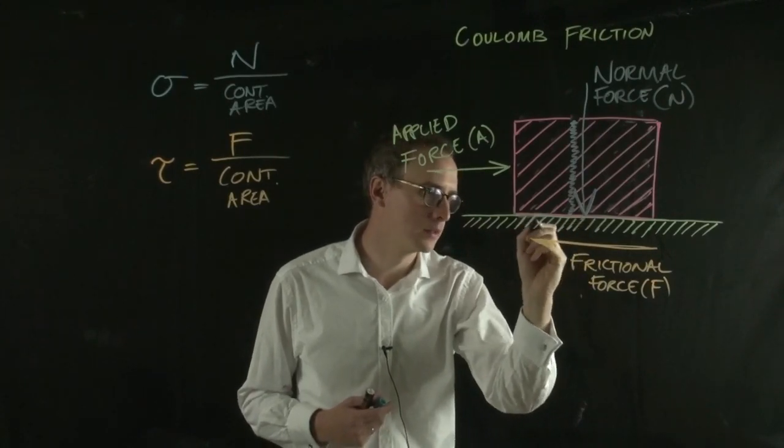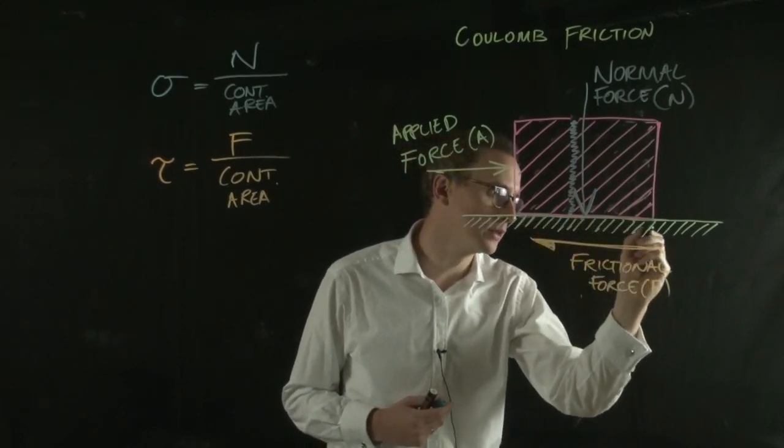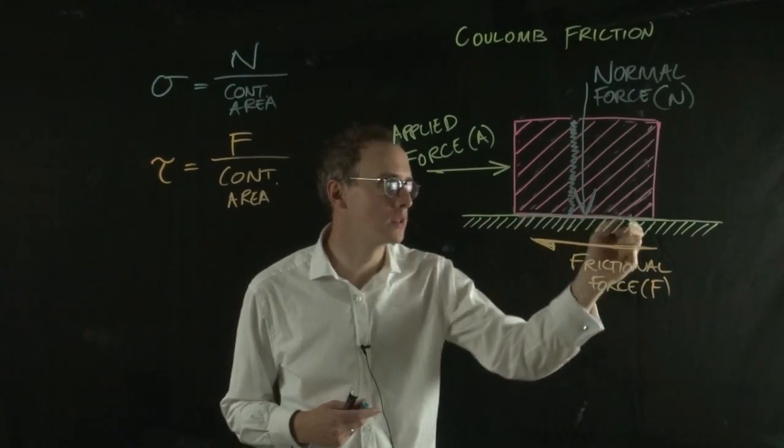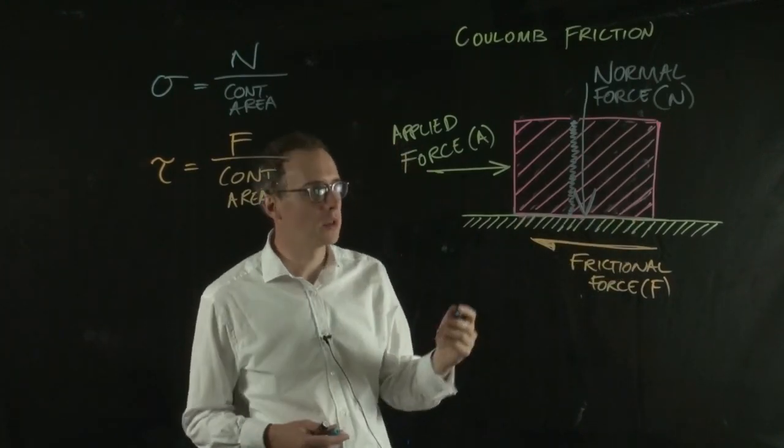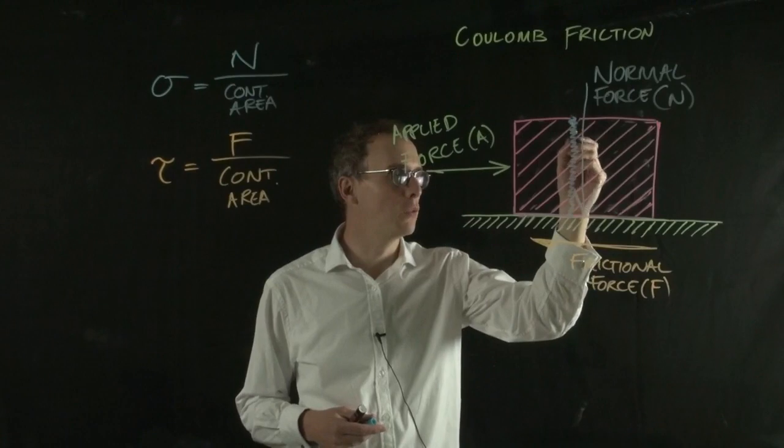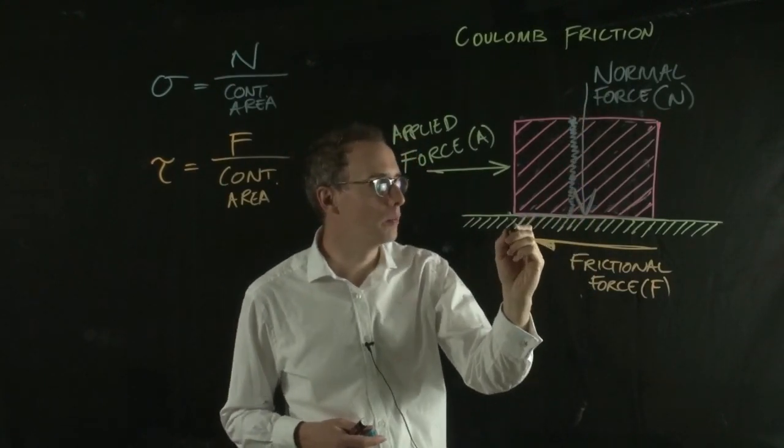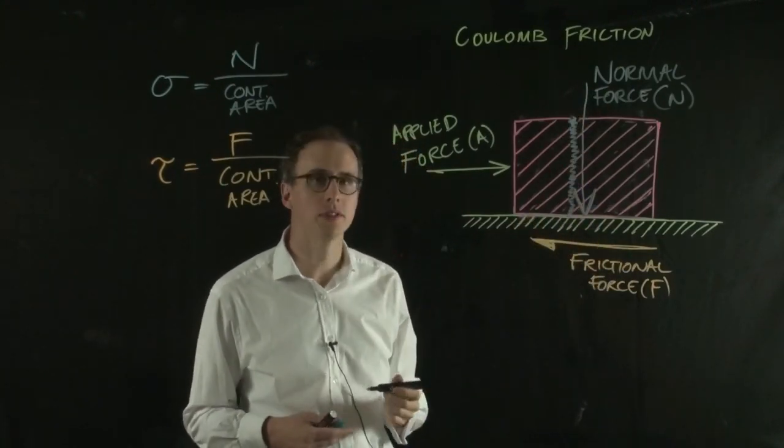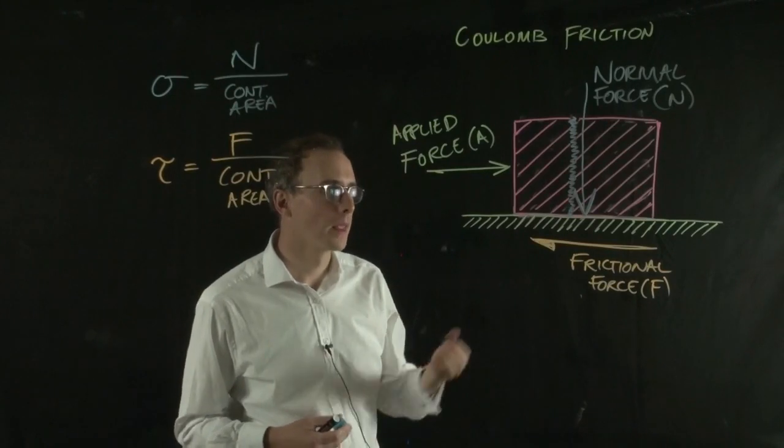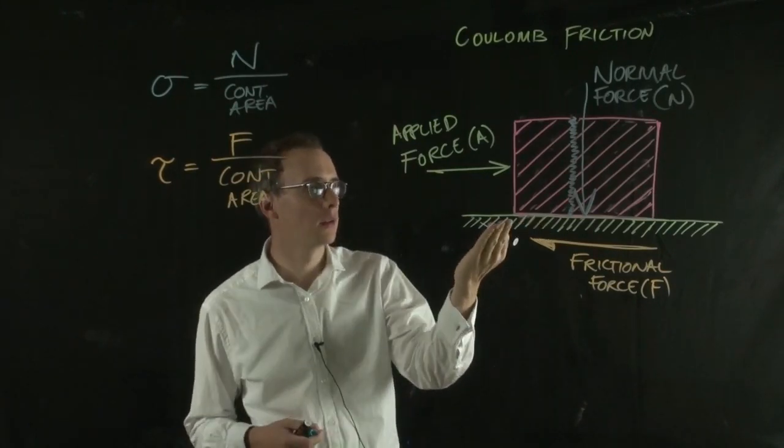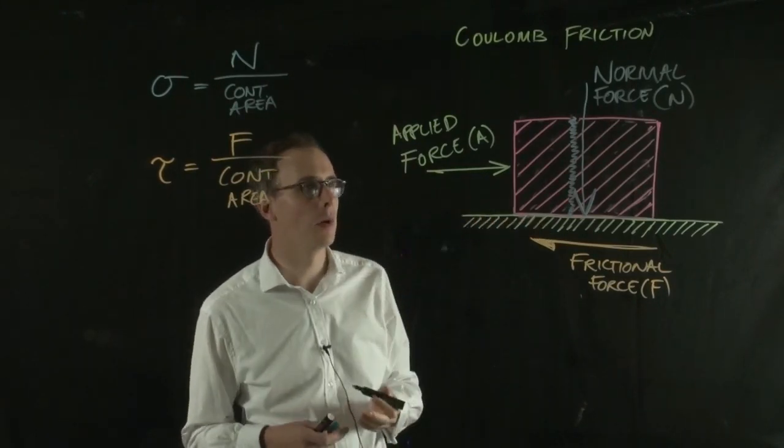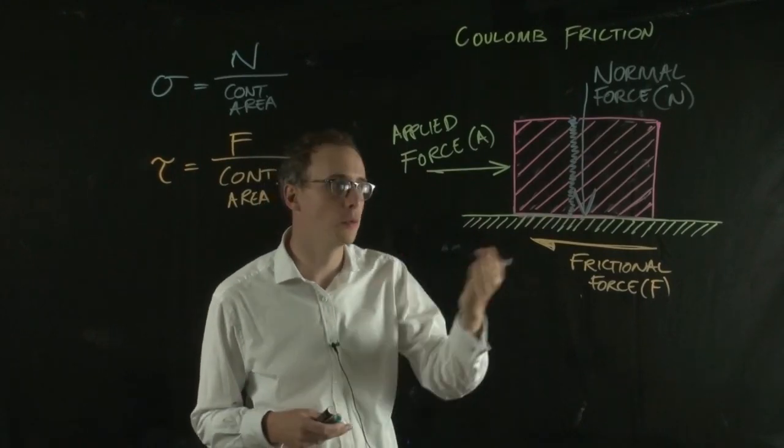The water would permeate through until it spread between the two surfaces. We'd have some level of water pressure between these surfaces, which would lower the amount of applied force needed to move the block.